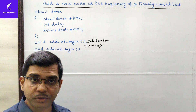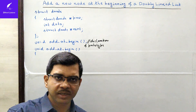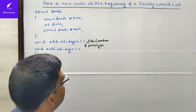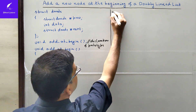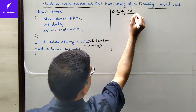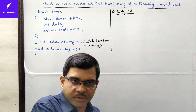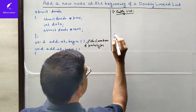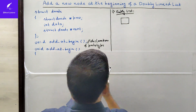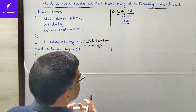When we implement this function, we may face two kinds of situations. The list where we are going to insert the new node at the very beginning may be empty, or the list may already exist. We will consider both cases one by one. First, we consider the empty list — if the list is empty, the head pointer will contain a null value.